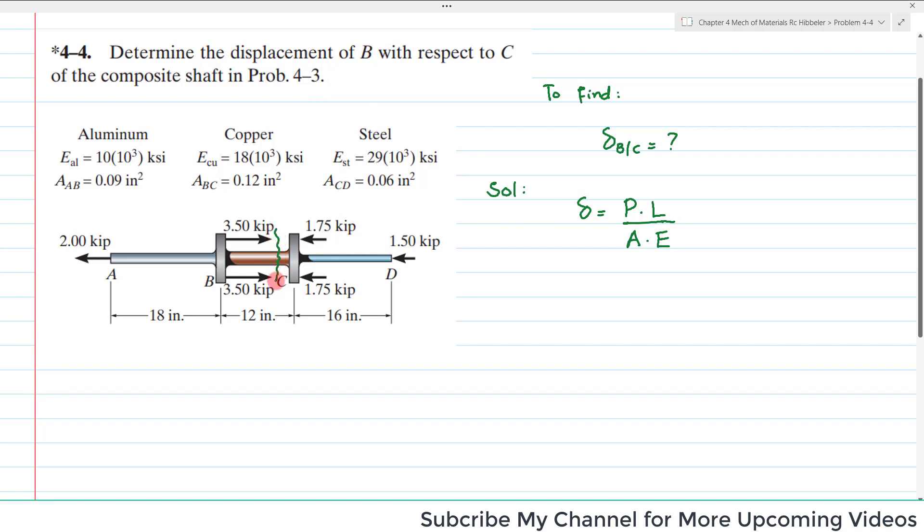I will draw the free body diagram for this portion. This is shaft AB, and the load at the end of shaft AB is 2 kips.